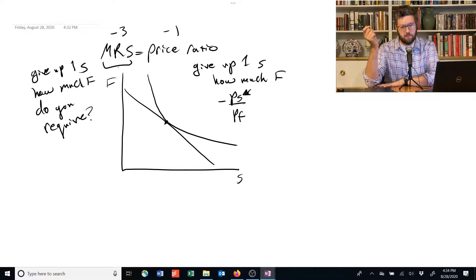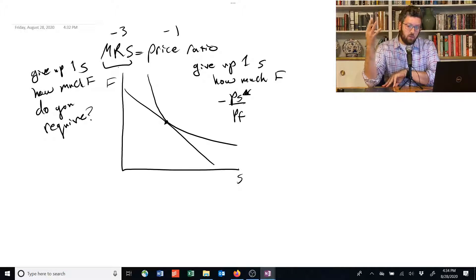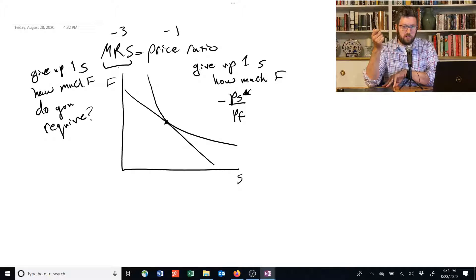Alternatively, you could give up three units of food and get one shelter and be equally well off. The price ratio, though, says you give up one unit of food, you can get one unit of shelter for the same price.